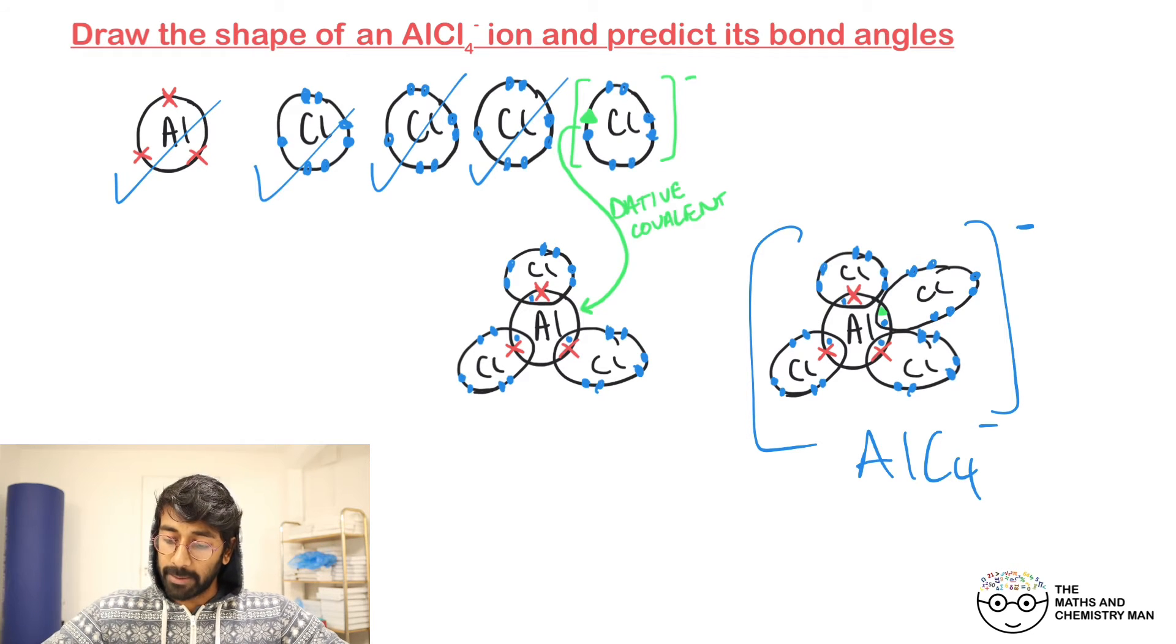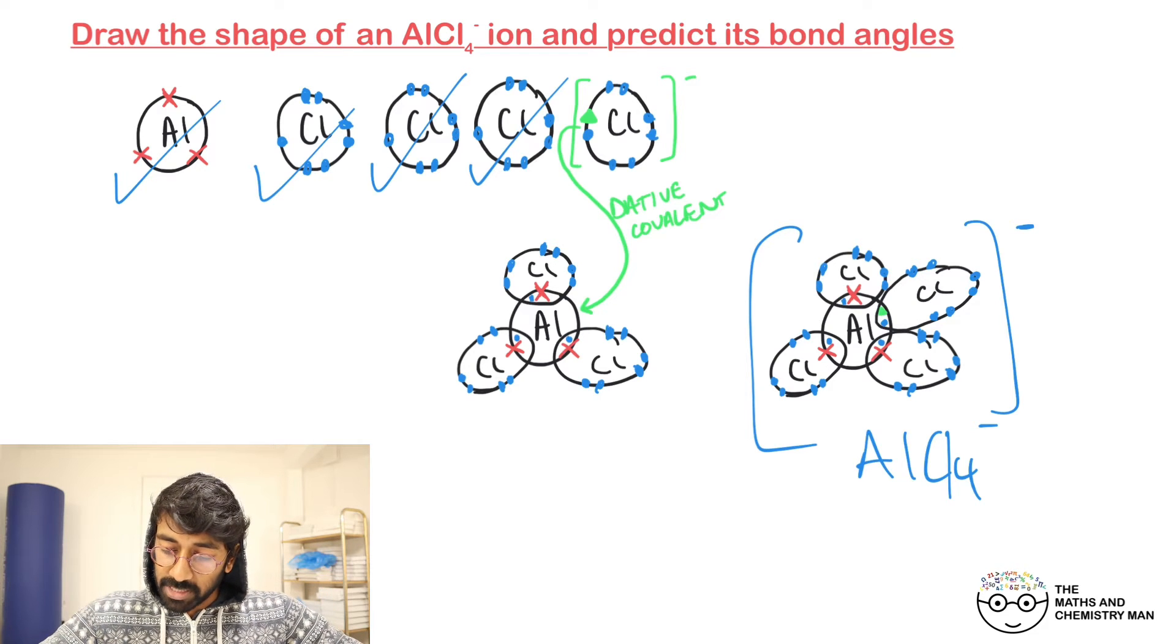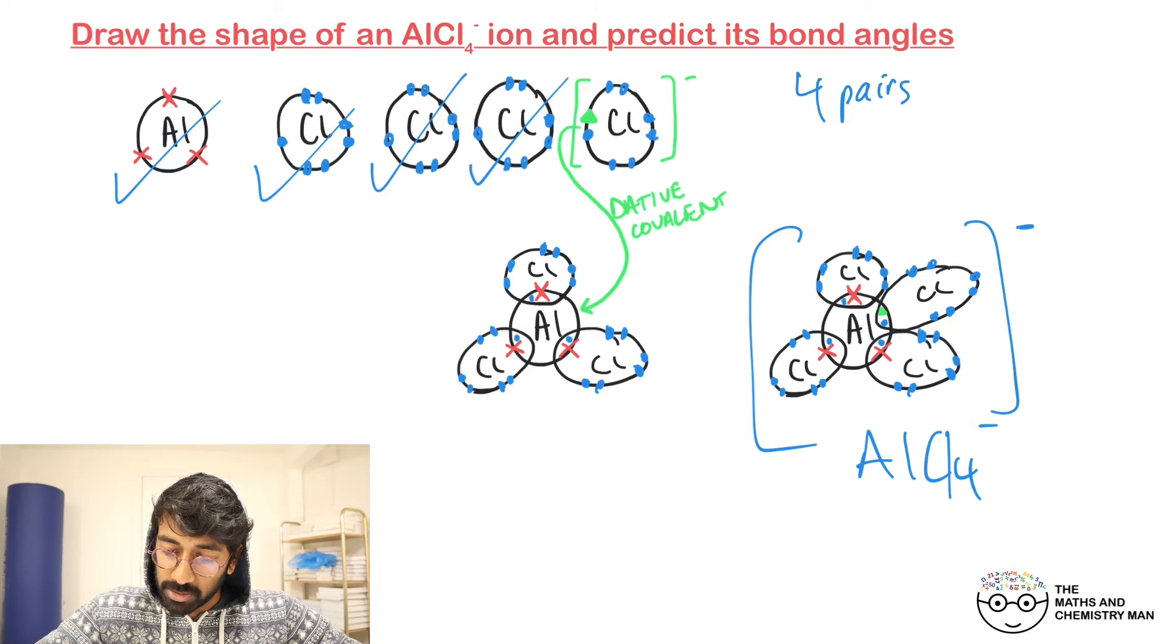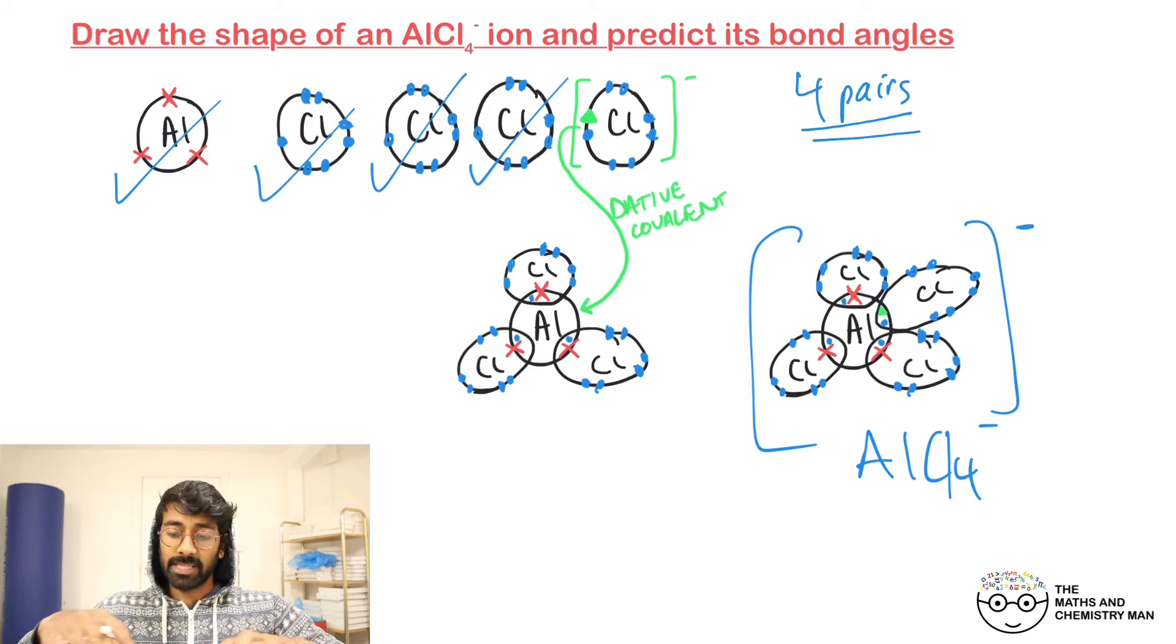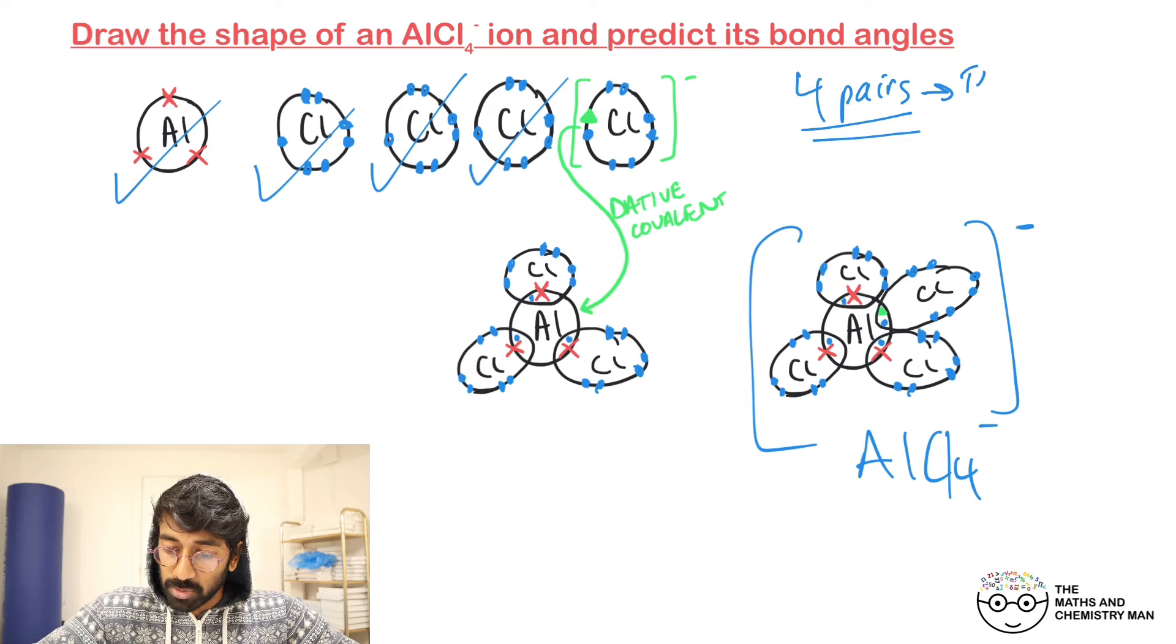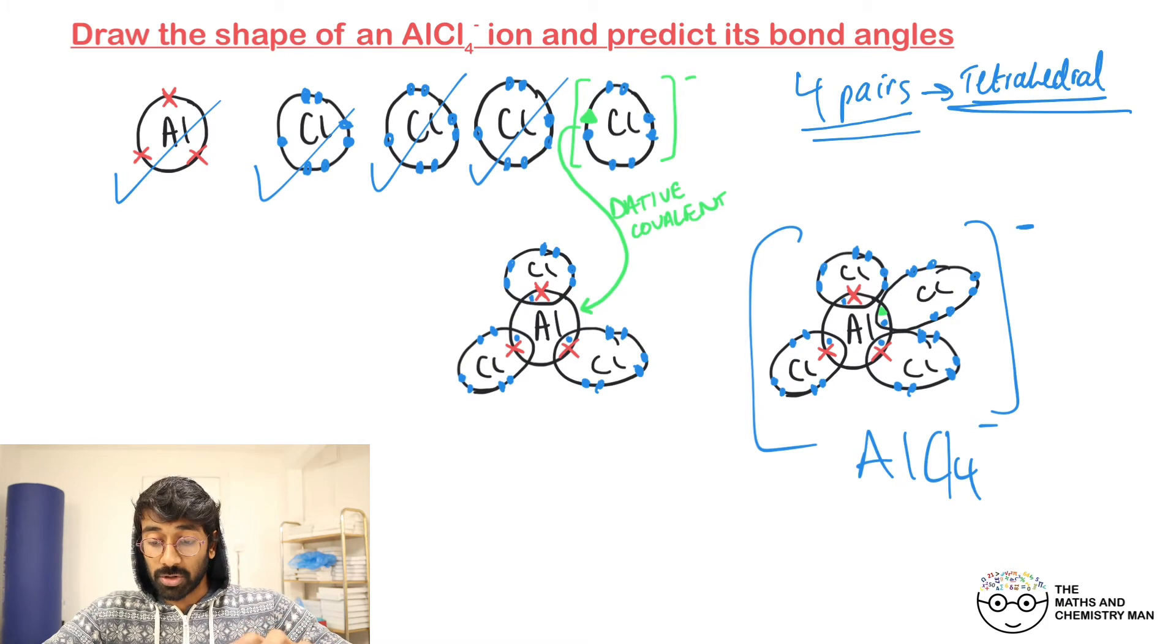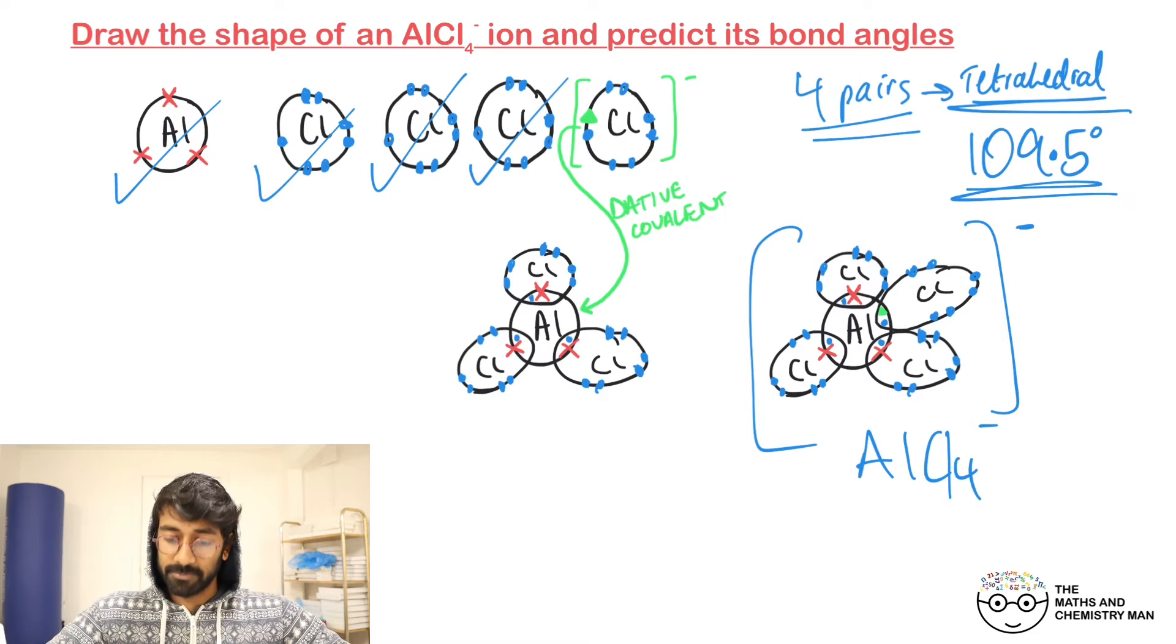The aluminium here is your central ion. How many electron pairs are around it? Four pairs around it in total. If there are four pairs around it, these bonding pairs are going to repel each other as far as possible, and it leads to a tetrahedral shape. In a tetrahedral arrangement, the bond angles are going to be 109.5 degrees.